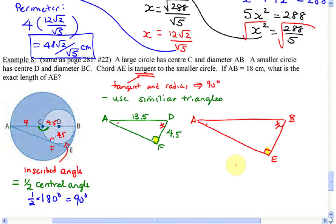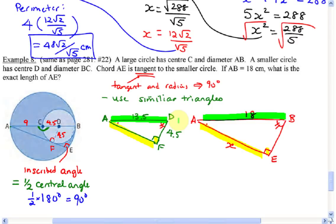Do we know any lengths for the big triangle? AB is 18, and our goal is to find AE, which I'll call X. X corresponds to AF on the smaller triangle, and 18 corresponds to AD which is 13.5. But I don't know AF yet — let's use Pythagoras first to find AF. Please make sure your answer is not a decimal; I want an exact length.